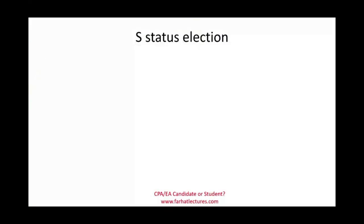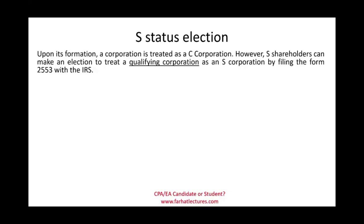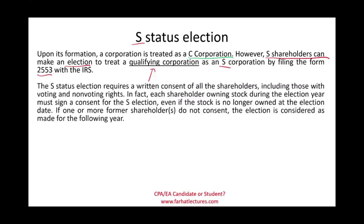How does an S corporation come to life? When a corporation is formed, it defaults to C corporation status. Shareholders can then elect S corporation treatment by filing Form 2553 with the IRS. This is an election — you choose to be treated this way. The S status election requires the written consent of all shareholders, including both voting and non-voting shareholders.